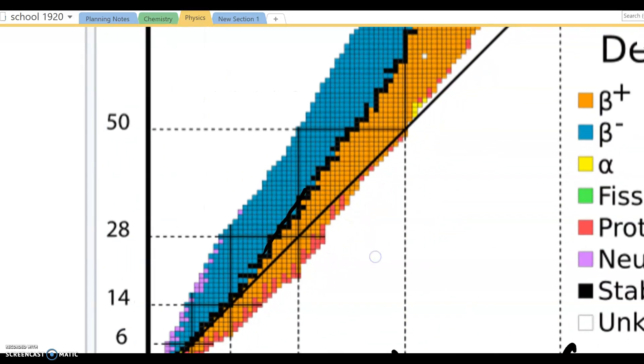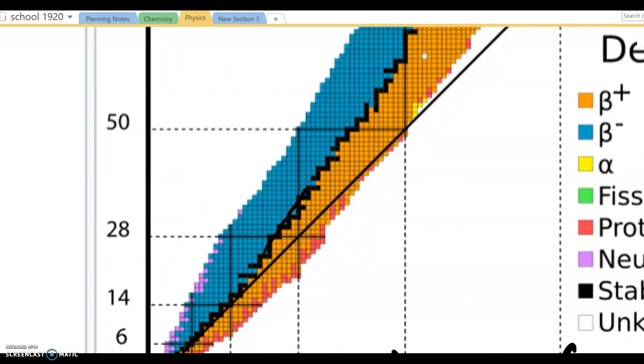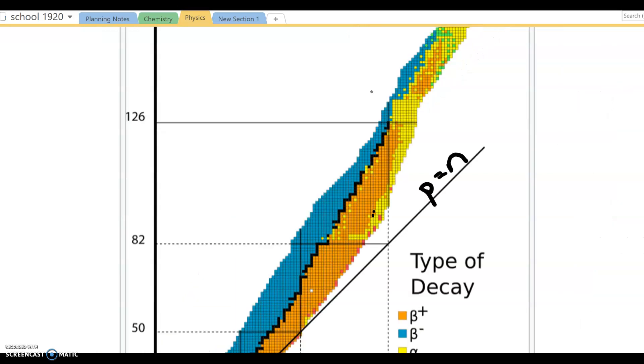And the larger the atom with more nucleons in it, the more the line veers off and shifts to having more neutrons than protons. So all the colored boxes are an isotope. The black line represents the isotopes that are stable. The colored boxes represent isotopes that radioactively decay.